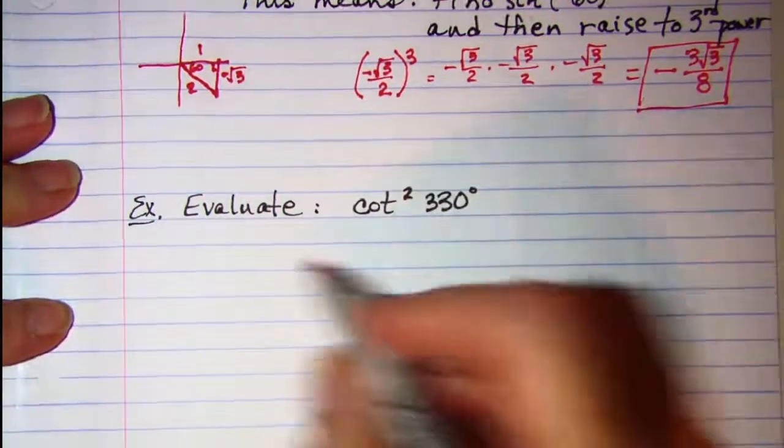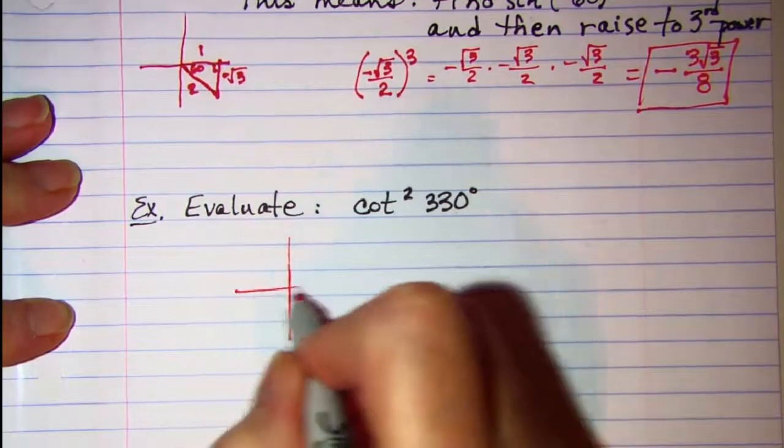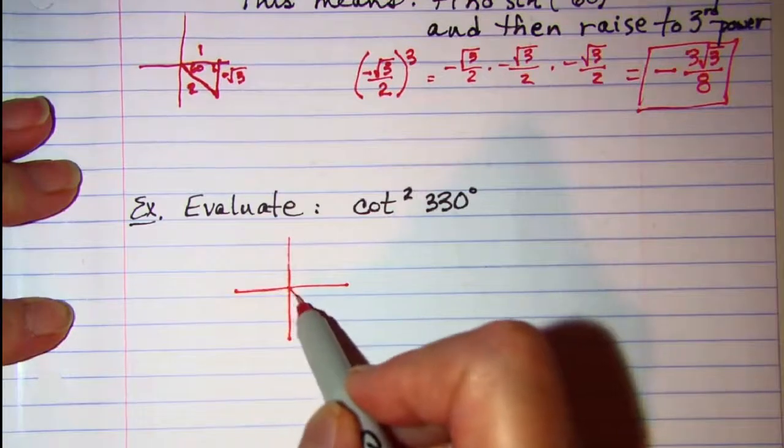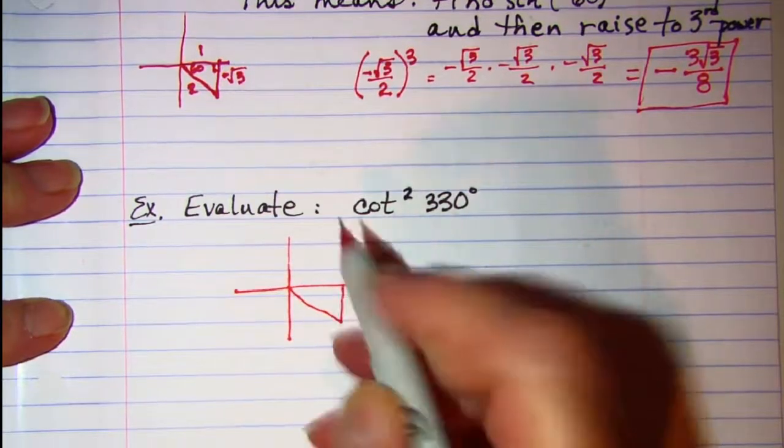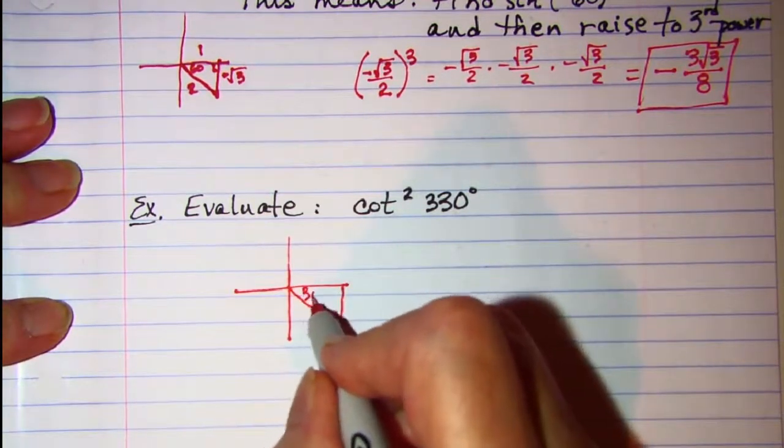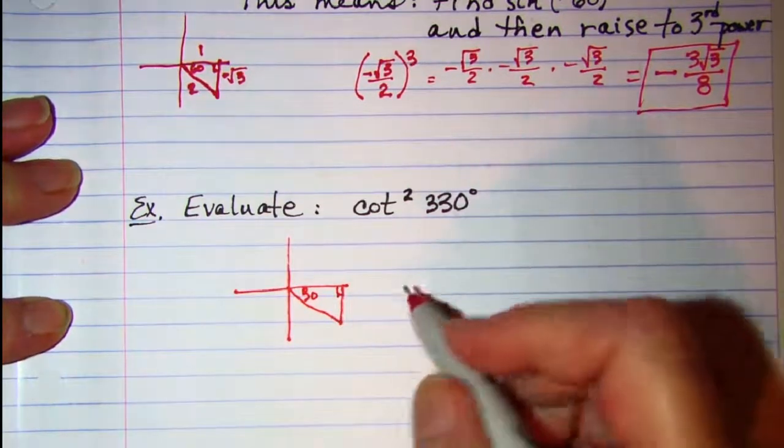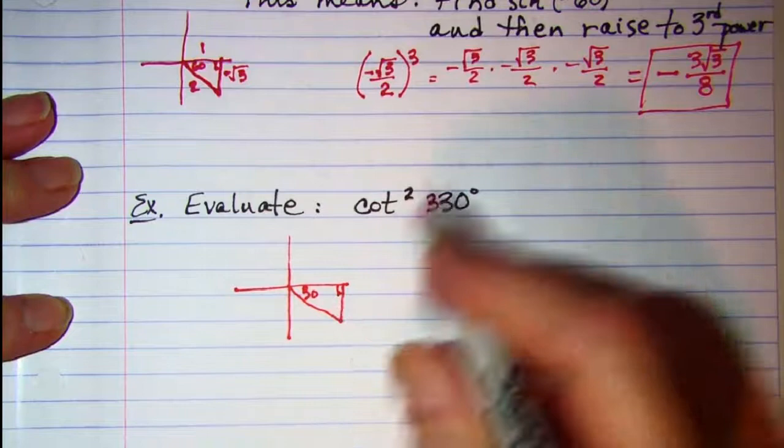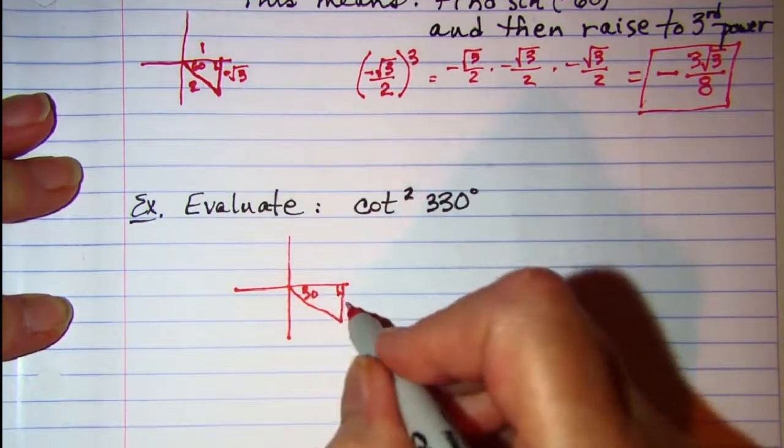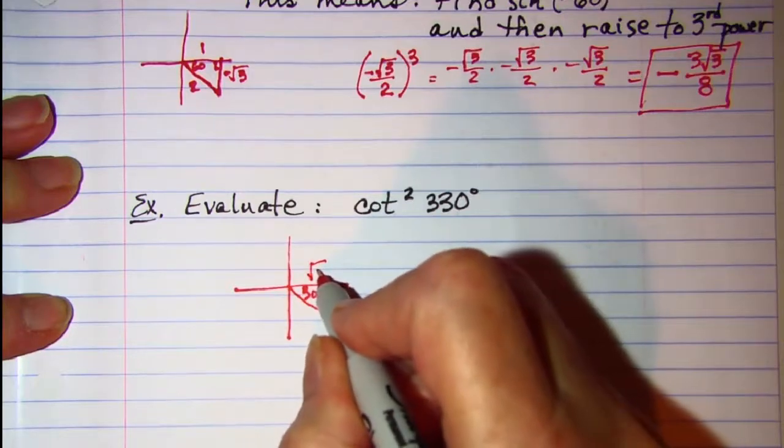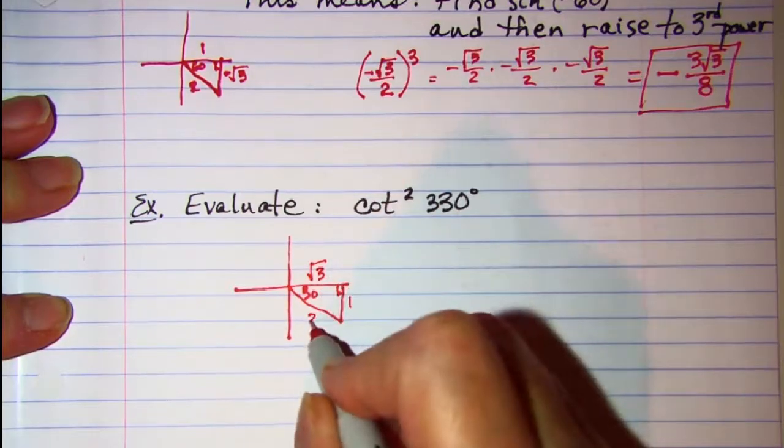So we first want to find the cotangent of 330°. 330° is 30 degrees short of a full rotation. Put our side measures in for this special triangle. Side opposite to 30 is 1, then √3, and then 2.